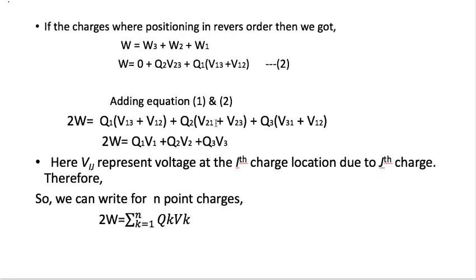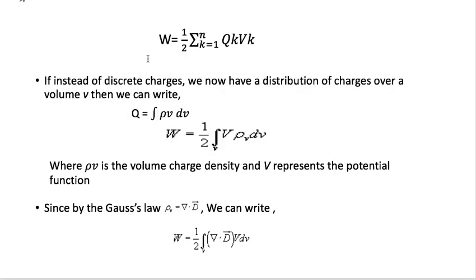Adding equation 1 and equation 2, twice the work done equals q1 times (v13 plus v12) plus q2 times (v21 plus v23) plus q3 times (v31 plus v32). Recognizing that v21 plus v23 equals v2 and v31 plus v32 equals v3, we get twice the work done equals q1·v1 plus q2·v2 plus q3·v3. For n number of charges, twice the work done equals the summation from k=1 to n of qk·vk, so work done equals one-half times that summation.